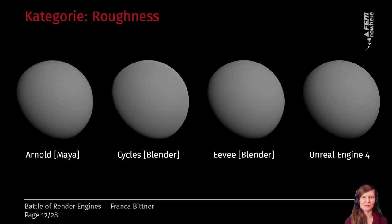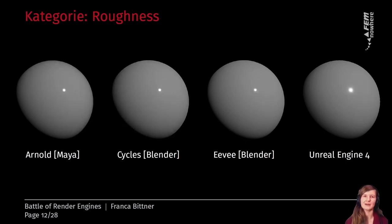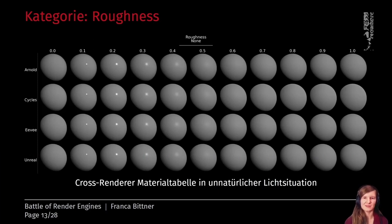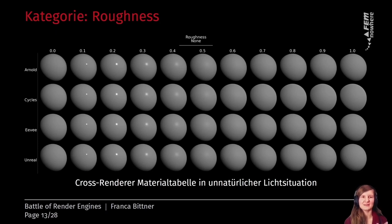Here are the results for roughness. In the unnatural lighting situation, not much is very different, and in other scenarios the roughness results are also very similar. Roughness is about whether an object has a very rough or very smooth surface, and as a result it reflects light either focused or distributed. For each renderer, I created a rendering framework tailored to that specific renderer, since there was no unified interface — though this is slowly changing with Python.